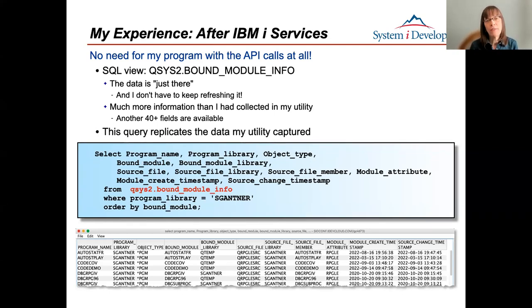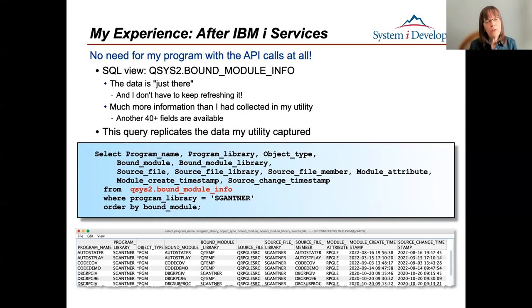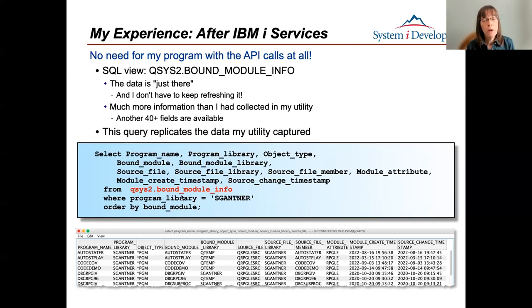The moral of the story is: you probably don't want to use that old code anyway - you'll want to use the IBM i Services. Here's the code just to give you an idea - over 200 lines of code, a whole bunch of data structures I had to figure out how to define in RPG from the API documentation, which isn't always RPG-friendly. And more than the amount of code is the amount of time it took me to figure out all of that from the API documentation.